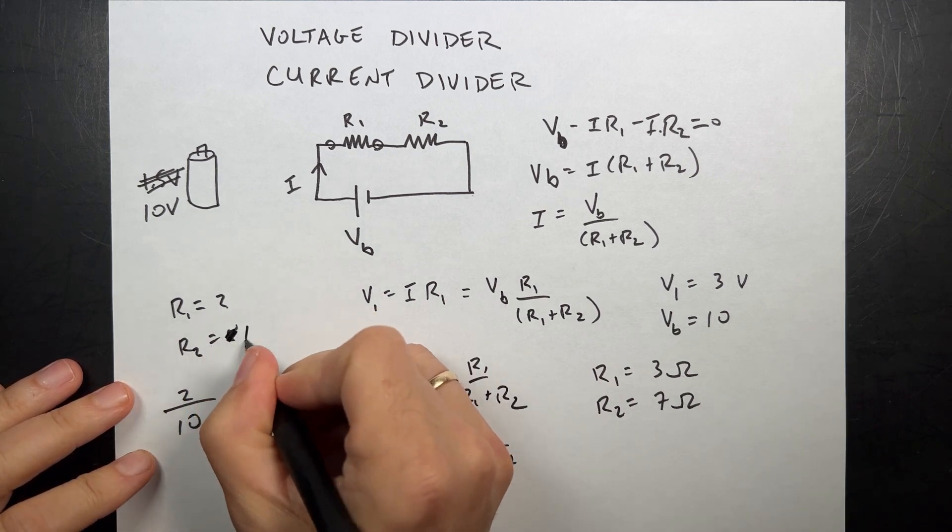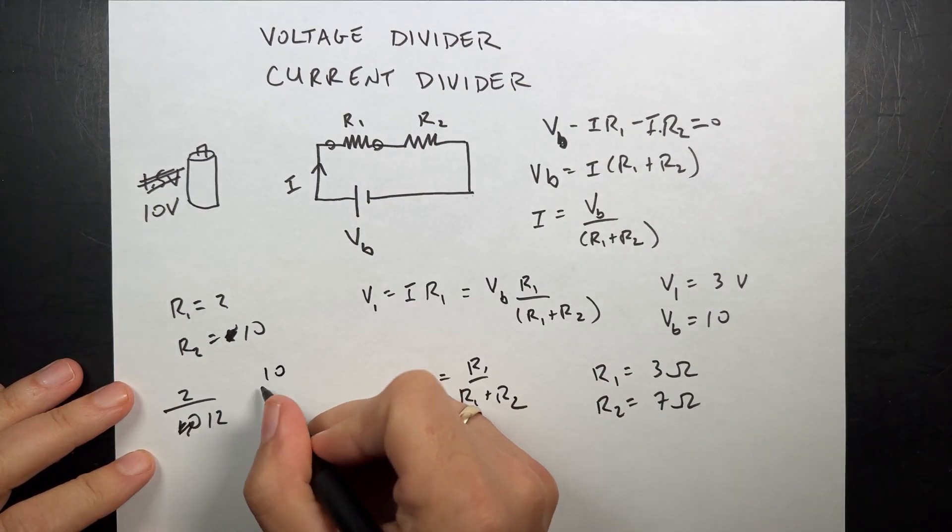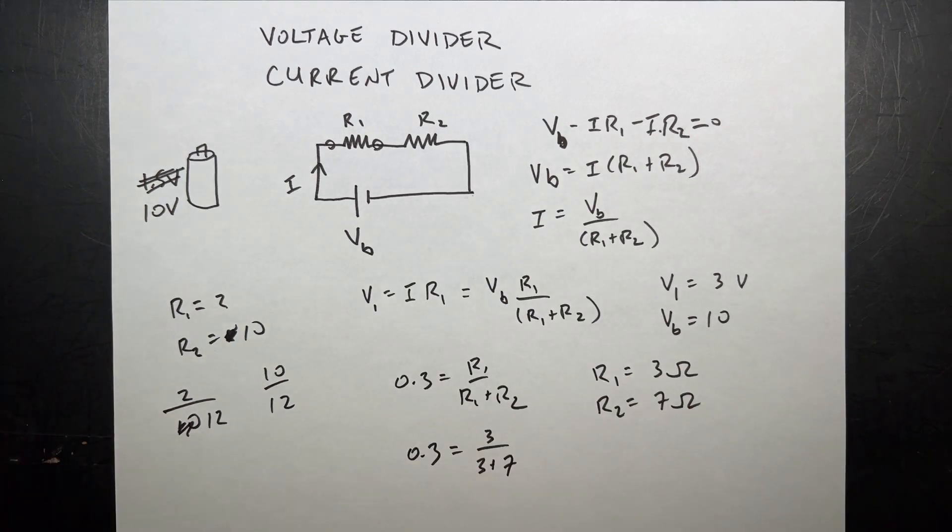Let's say this is 10. So it would be 2 over 12 for that one, and this would be 10 over 12 for that one. Voltage divider. It divides voltage. Get it?